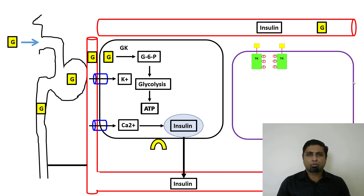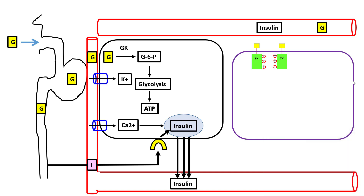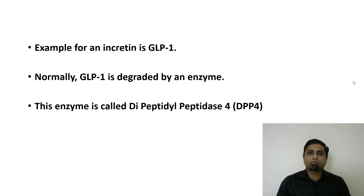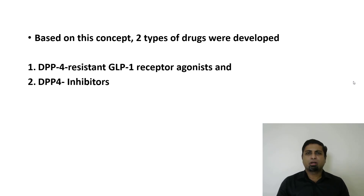We spoke about hormones released by endocrine cells of the intestine in response to an oral glucose load — these hormones are called incretins. They bind to receptors in the beta cells of the pancreas and stimulate more insulin release. An example of an incretin is glucagon-like peptide-1, or GLP-1. Normally GLP-1 is degraded by the enzyme dipeptidyl peptidase-4, or DPP-4. Based on this concept, two types of drugs have been developed: DPP-4-resistant GLP-1 receptor agonists, and DPP-4 inhibitors.